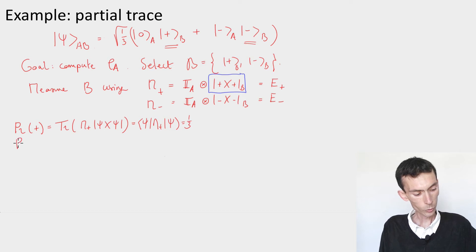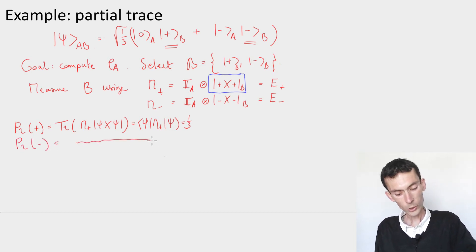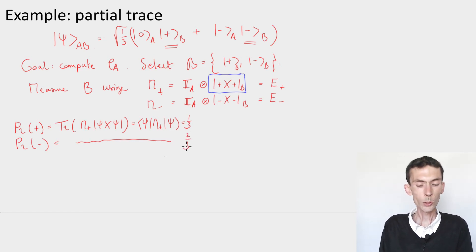Similarly, if we compute the probability of obtaining the outcome minus, then we do the same calculation, and you'll see that this probability is two-thirds. That's pretty easy to check.